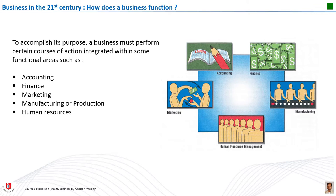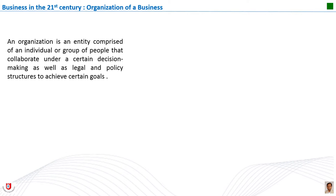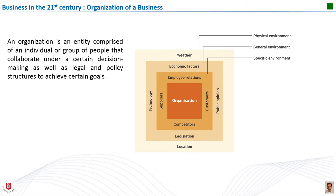An organization is an entity comprised of individuals or groups of people that collaborate under certain decision-making, legal, and policy structures to achieve certain goals. All business organizations operate within an environment that influences the way the organization operates — for example, legislation may act to control some of the organization's activities. However, the actions of an organization may also influence parts of the environment — for example, companies may launch an advertising campaign designed to draw customers away from competitors.